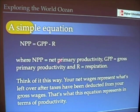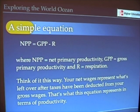This simple equation — with which you have some experience if you've ever earned money — is the basis for the light-dark-bottle method. The amount of oxygen or carbon left over is equal to that which is produced minus that which is consumed.